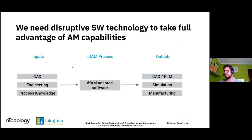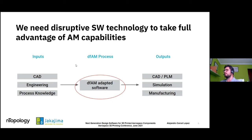We truly need some disruptive software technology that follows the advantages that additive manufacturing capabilities have given us. We can keep working with our CAD software, those assemblies, and the functionality of everything, providing our engineering and process knowledge — but we need to bring those to an adapted tool for design for additive manufacturing that allows us to explore options efficiently, then simulate those different possibilities, manufacture them, and reintegrate them in our CAD and PLM system.